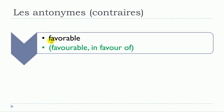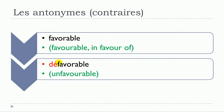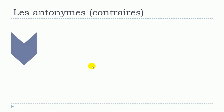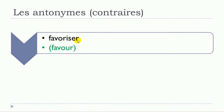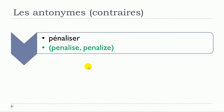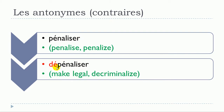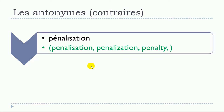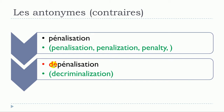The first example is favorable — I'll put the English translation in green — favorable gives us défavorable. Using the same technique: favorisé gives us défavorisé. Then pénalisé gives us dépénalisé, and the noun pénalisation gives us dépénalisation.